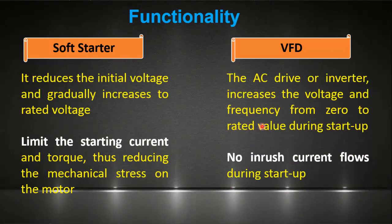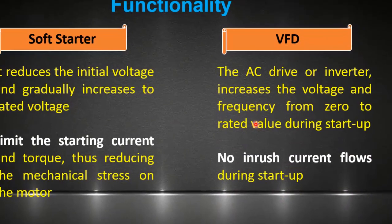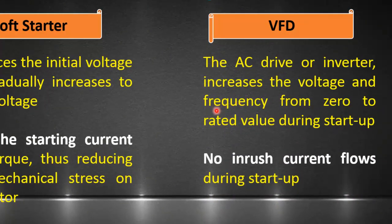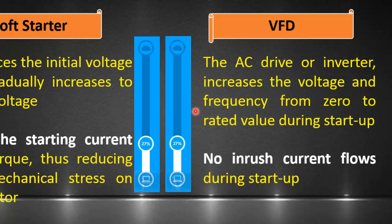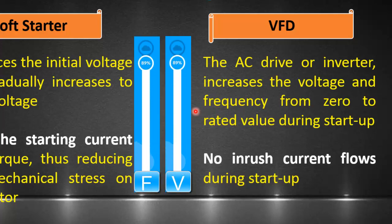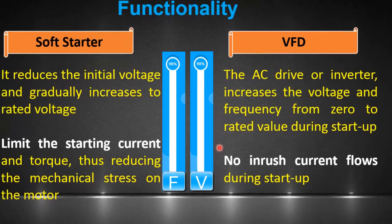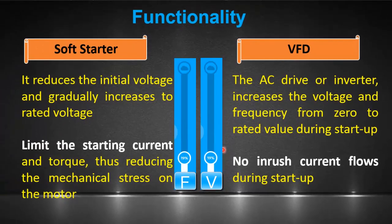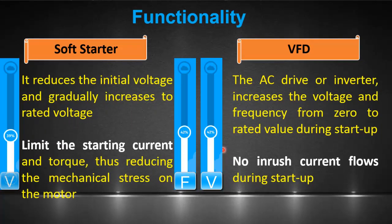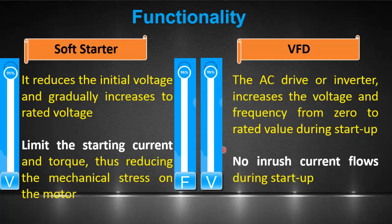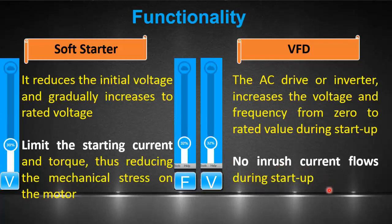A VFD, also known as an AC drive or inverter, is a device that controls the speed and torque of an electric motor by varying the frequency and voltage simultaneously supplied to the motor. The main difference is that a soft starter only controls the voltage, while a VFD controls frequency and voltage both at the same time. Therefore, almost no inrush current flows during starting of the motor.